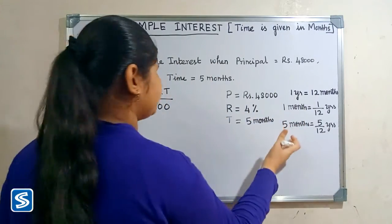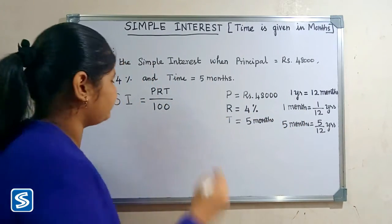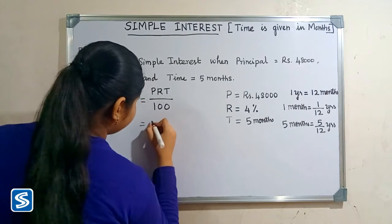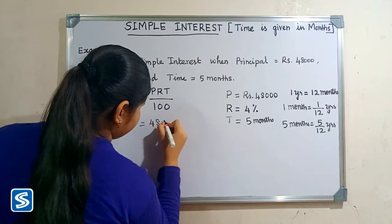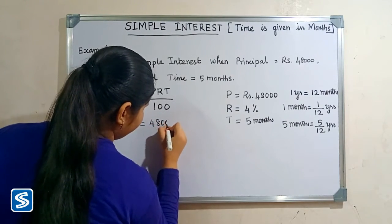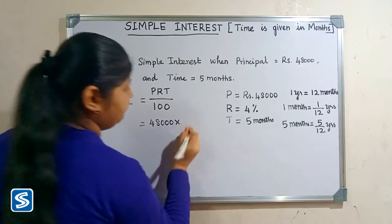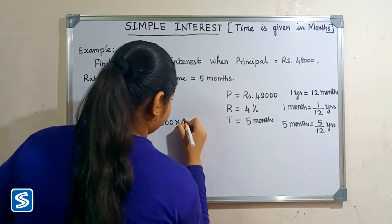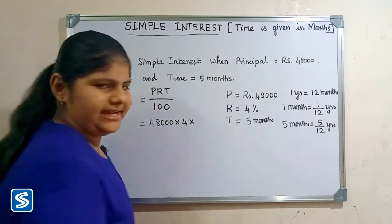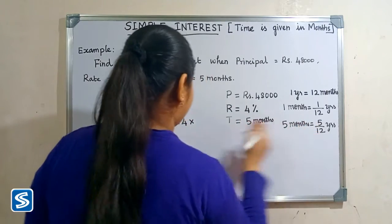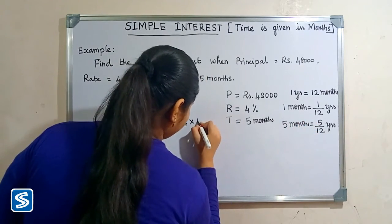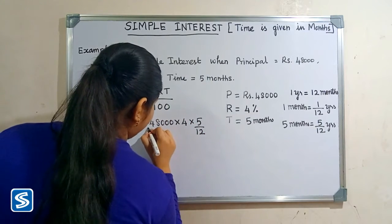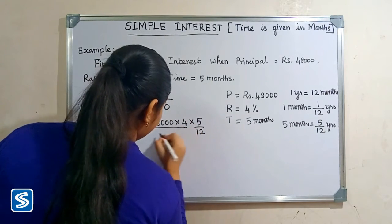Now we will substitute the values: 48,000 multiplied by 4, multiplied by 5 by 12, divided by 100.